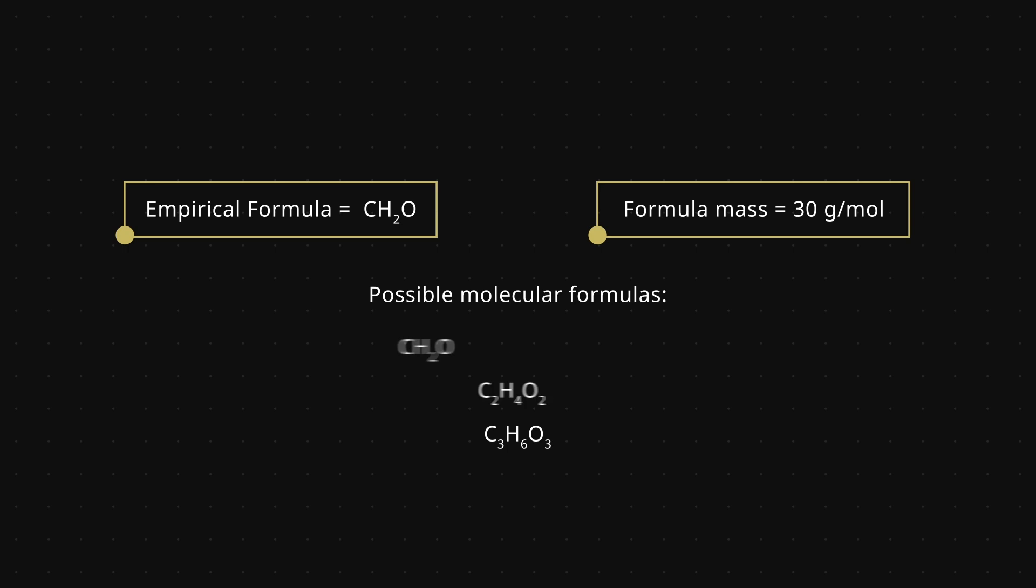When our first unknown sample is run through the mass spectrophotometer, we find that we obtain a molar mass of 30 grams per mole. This is equal to the formula mass. So the molecular formula is not a multiple of the empirical formula. It must be CH2O, which is the molecular formula of formaldehyde. Our first unknown is therefore formaldehyde.